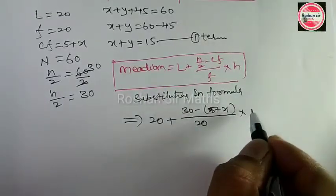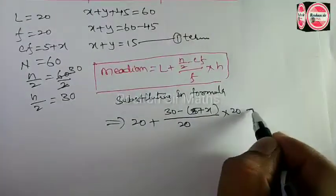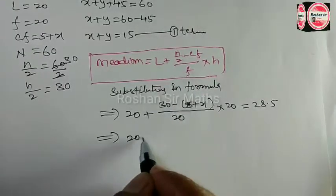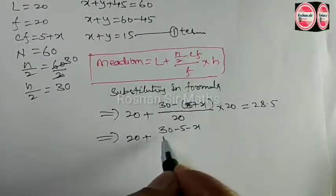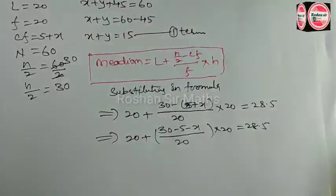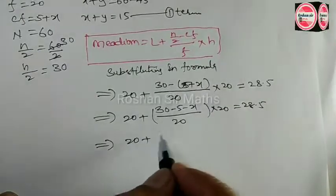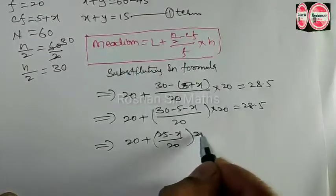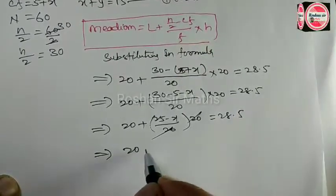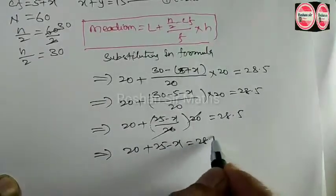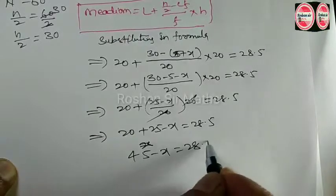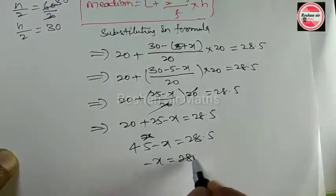H is equal to 28.5. Now substituting: 20 plus (25 minus x) by 20, into 20 is equal to 28.5. The 20s cancel, giving us 20 plus 25 minus x is equal to 28.5, so 45 minus x is equal to 28.5.